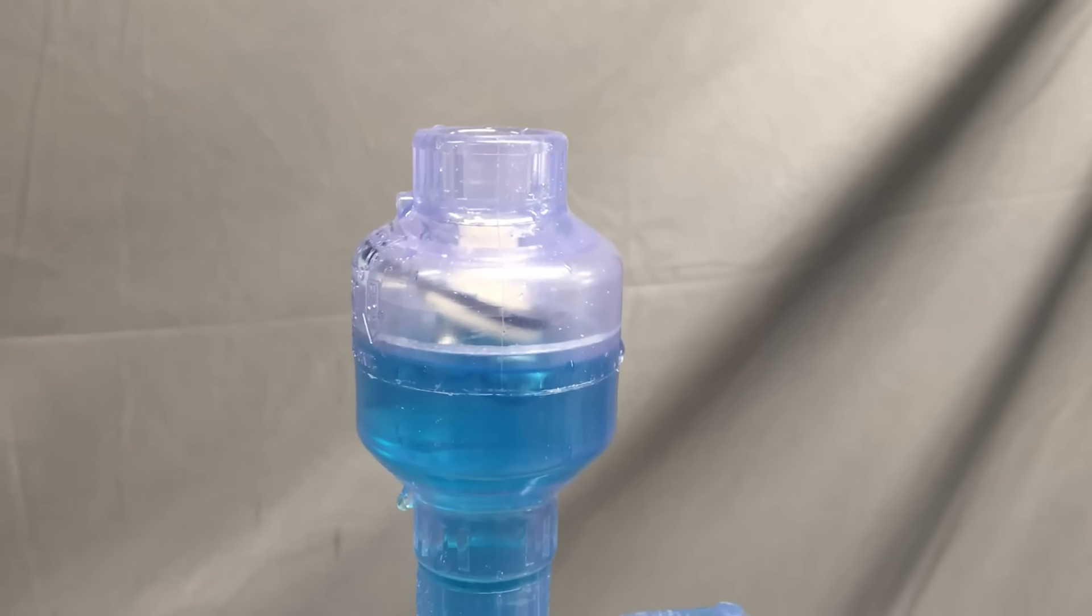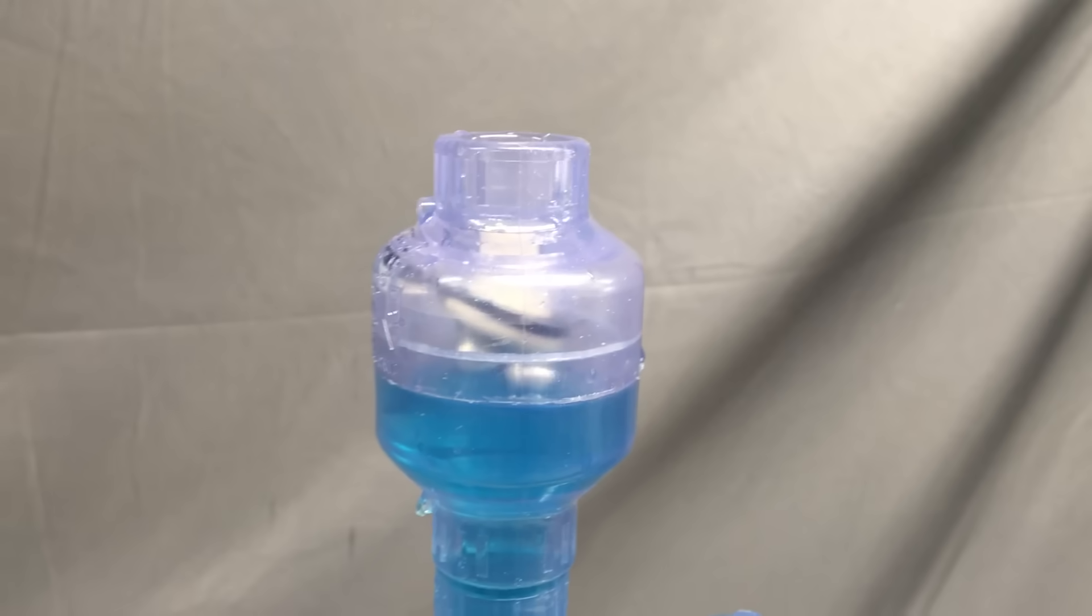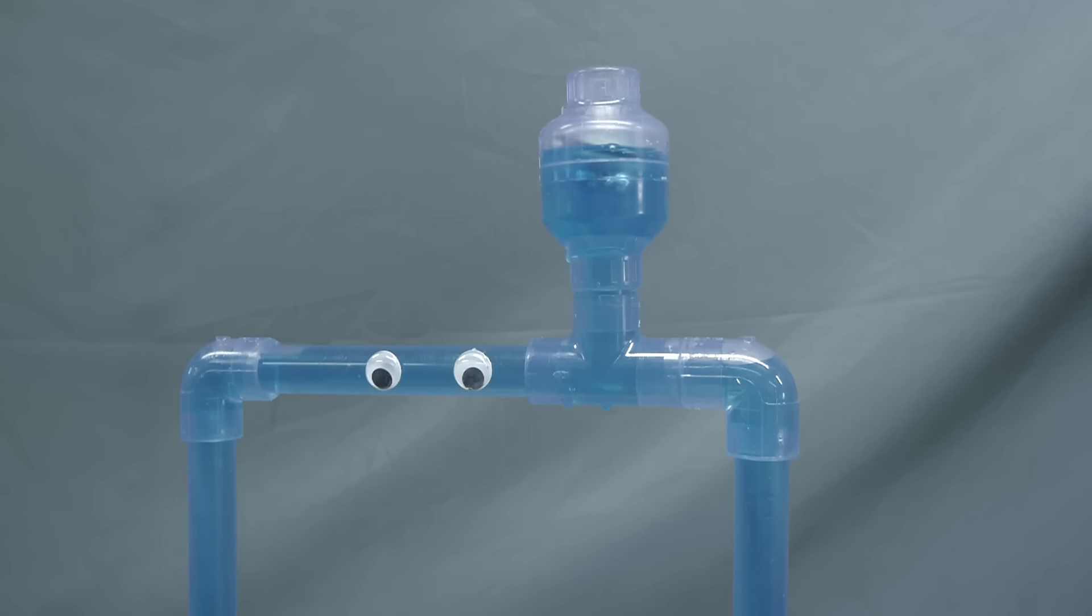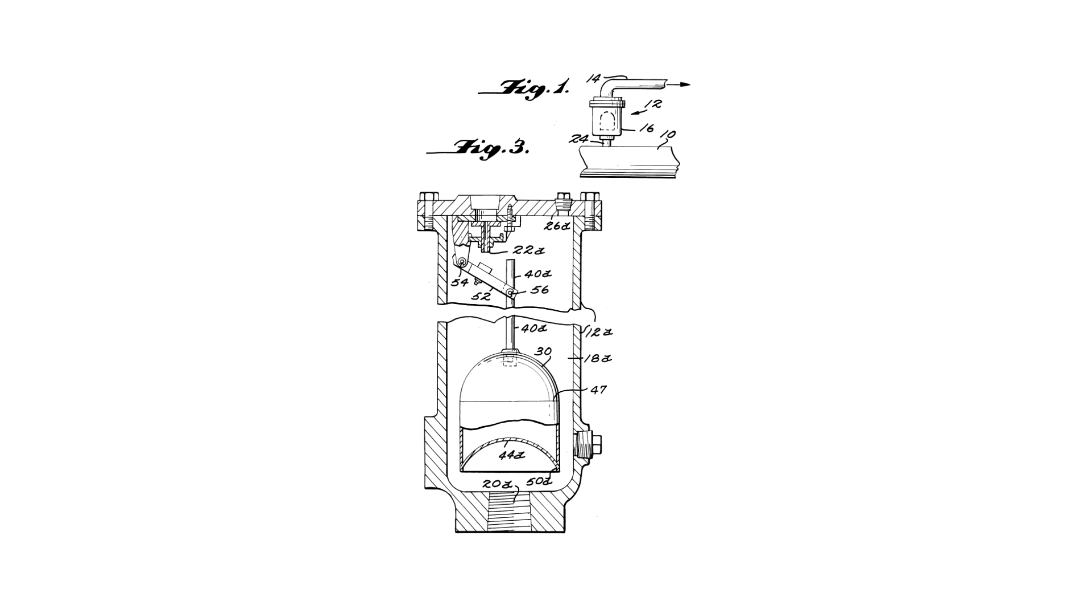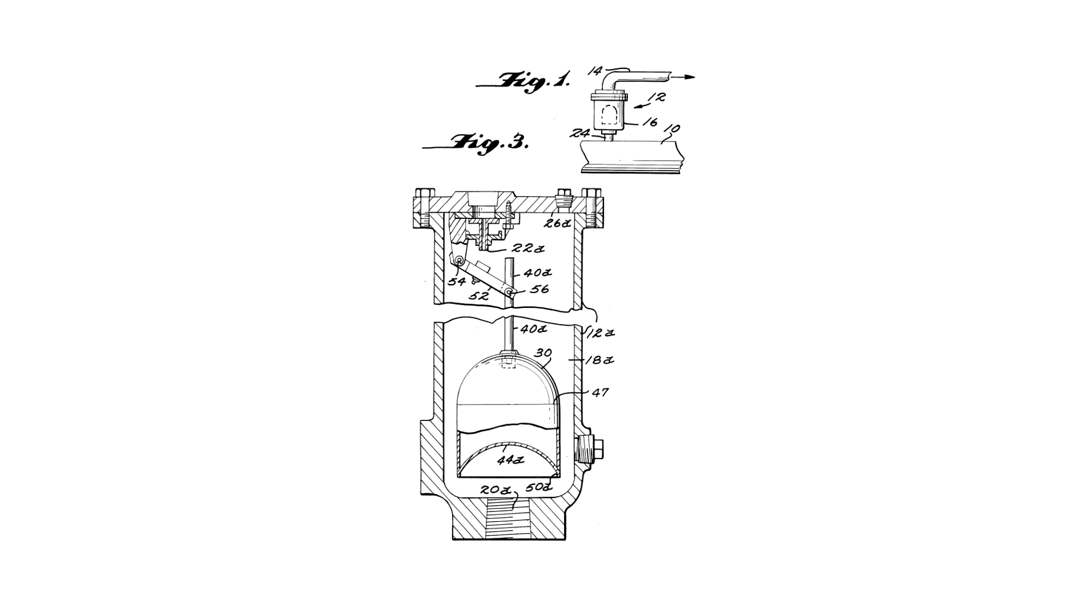I built an example of this by gluing a float to a check valve. When there's no air in the pipe, the float holds the valve closed. But when a big enough air bubble grows in the pipe, the float acts like a weight and pulls the valve open, venting the air from the pipe. Keep an eye out for these types of valves when you're perusing the constructed environment, and now you'll know how they work.